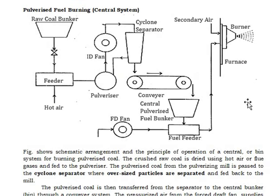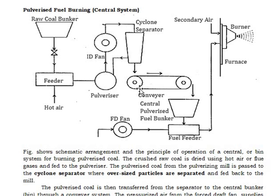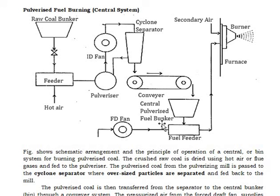In the pulverized fuel burning central system, you can see the raw coal bunker where we feed the coal. Hot air enters through the feeder and it is sent to the pulverizer, then to the cyclone separator, which through a conveyor feeds into the fuel feeder, and then it is sent to the furnace for the burner.